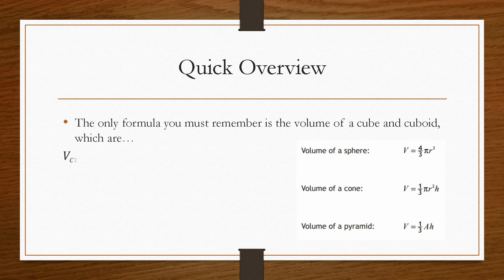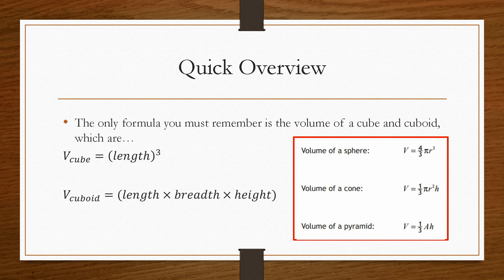So the only formulas that we will need to remember is as follows. So it's the volume of the cube, which is the length to the power 3, because a cube, each length is the same size. So we just need to multiply it by the width, the breadth, and the height. That's when we would achieve our units to the power 3.